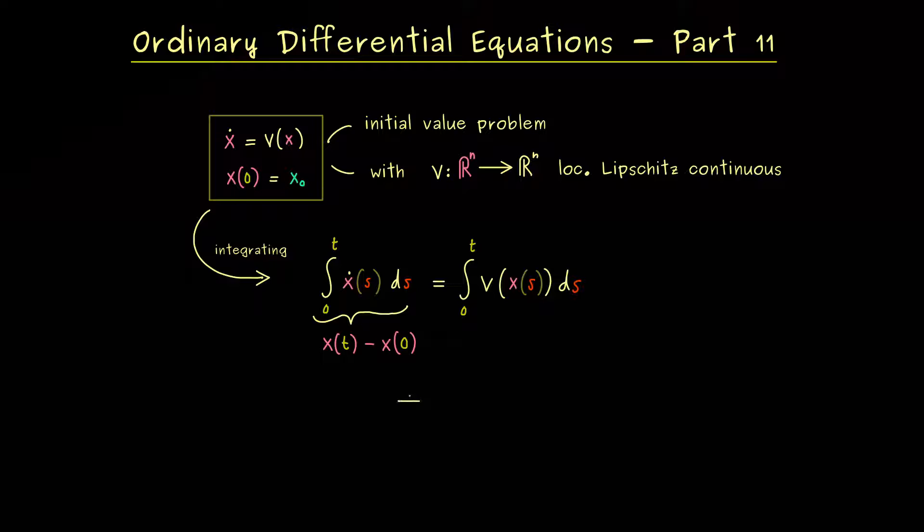Therefore, this whole calculation implies that we have a formula for the function x(t). Namely, it's given by the point x₀ plus the integral of the function v. So not complicated at all. And this is indeed our solution of the initial value problem. However, this does not help so much because the solution x we find on the right hand side here again. Hence, it's only an implicit formula for the solution of the initial value problem. However, it definitely helps us for showing the existence of a solution.